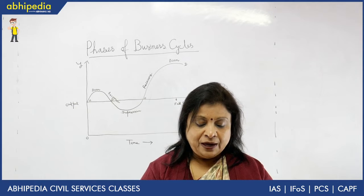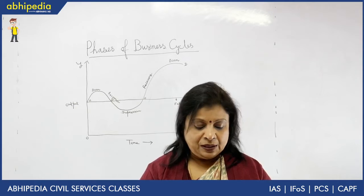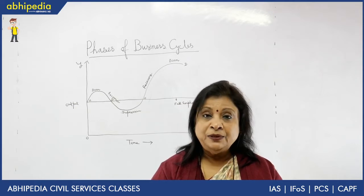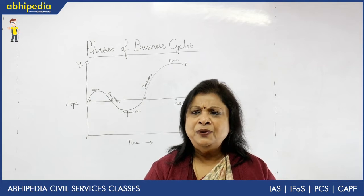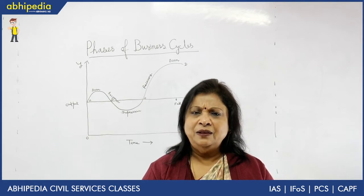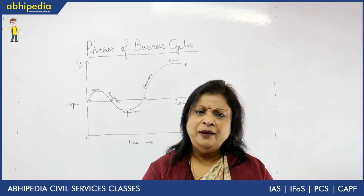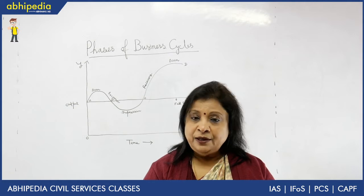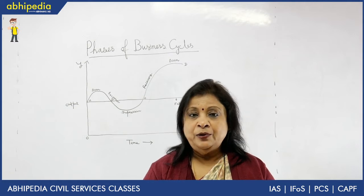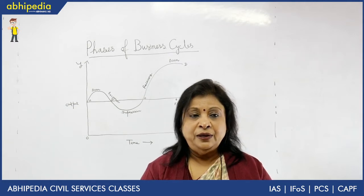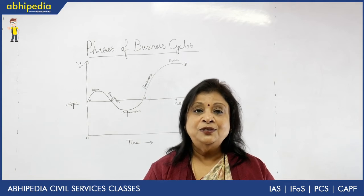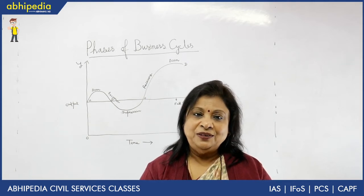Because of low demand, there is a low level of investment. People grow pessimistic — there is an element of pessimism in the entire economy, along with moral degradation, as happened in Germany in the 1930s. This is the phase of depression.